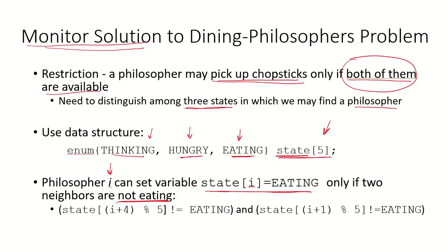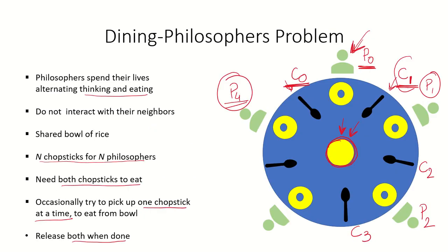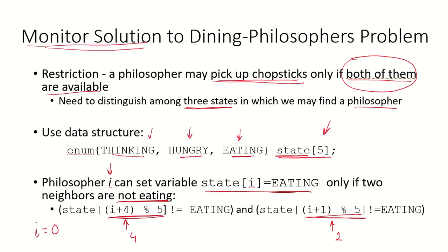The left and right neighbors are specified by (i + 4) mod 5 and (i + 1) mod 5. So if i equals 0, this gives 4 and 1 respectively, meaning neighbors 1 and 4 should not be eating. Only when the left and right neighbors are not eating can philosopher i change its state to eating.